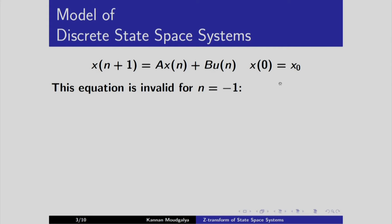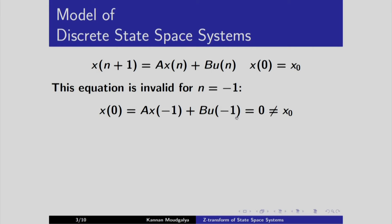If you substitute n = -1, then you get A·x(-1) + B·u(-1). This is 0 and this is 0, so together the answer comes to 0, which equals x(0). But we want x(0) to equal x₀, so 0 is not equal to x₀. This does not convey exactly what happens for negative time, especially for n = -1.